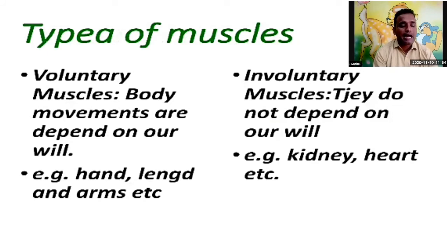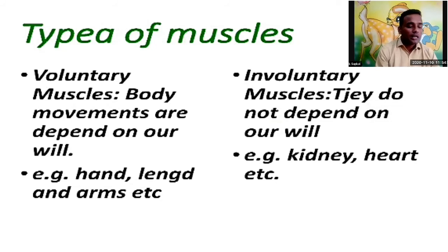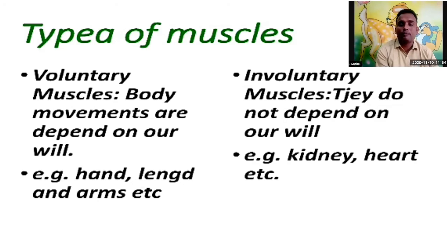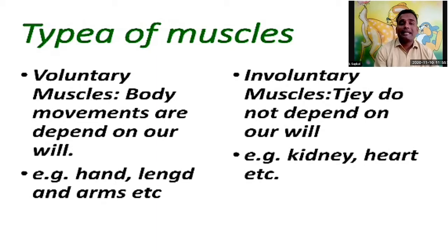There are some types of muscles — voluntary muscles and involuntary muscles. Voluntary muscles are ones whose movements depend on our will — walking, eating, running, etc. These movements depend on our desire. If you want to write something, writing is a voluntary activity because it depends on your desire — if you want to write, you can; if you don't, you won't.